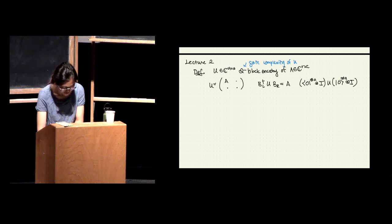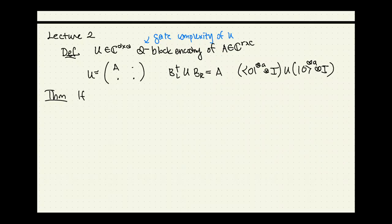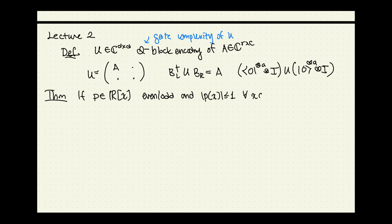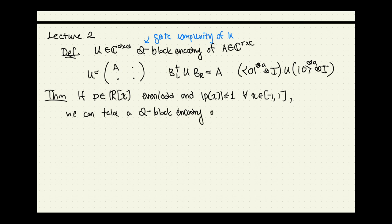Where we left off, I had this statement that I asserted without proof: if you have a block encoding and you're applying polynomials to block encodings — given some polynomial that's even or odd and bounded by 1 for all x in [-1,1] — we can take a Q block encoding of A and map it to something like D log D plus Q, a block encoding of the polynomial applied to A.